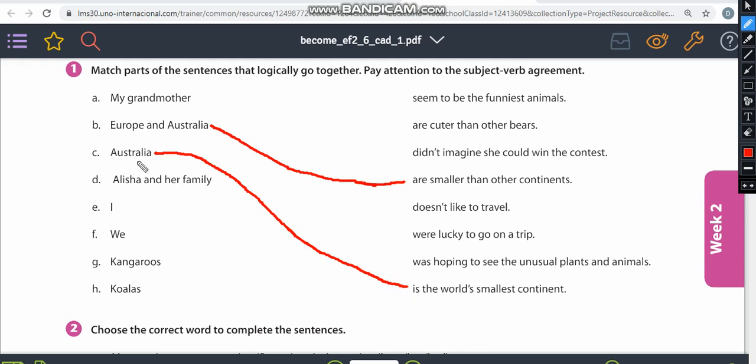So Alicia and her family. Here's the one that we have to think about. Alicia and her family. So it can be didn't imagine. But it can be doesn't like to travel. Why it can be doesn't like to travel? Because it's Alicia and her family. So we have a sentence in the plural form, right?